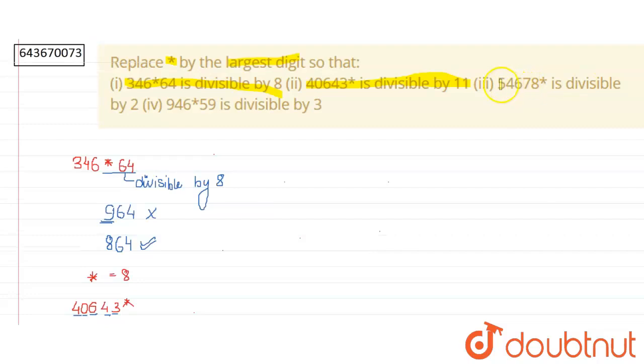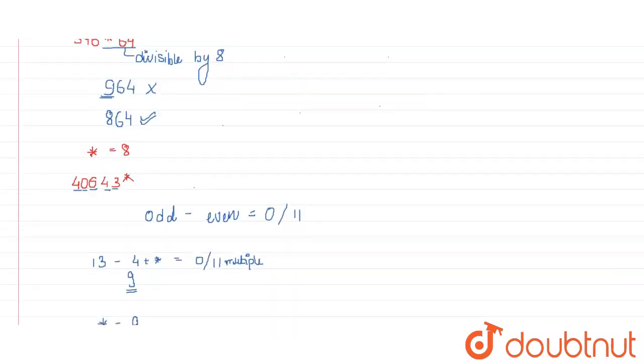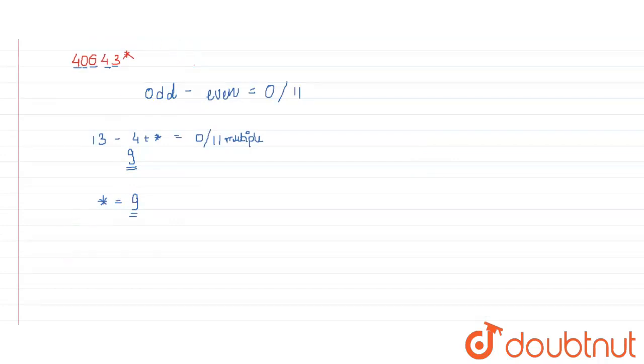Let's move to the next one, which is 54678* divisible by 2. The number given to us is 54678*.